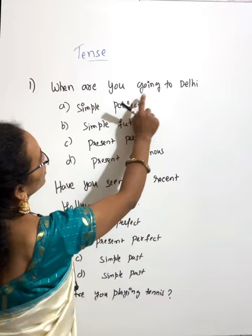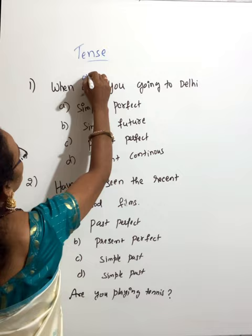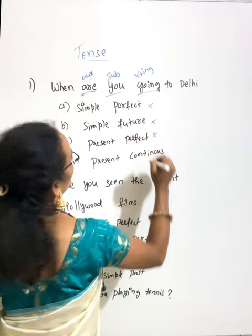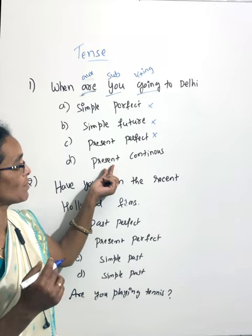We will talk about this in a tense. Here, 'are' is the angular verb, 'you' is the subject, and 'going' is V1 plus. This is continuous — present continuous. If you don't know past or present, we will talk about this angular verb. Next one.